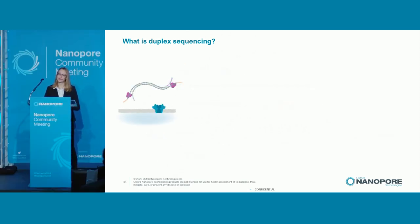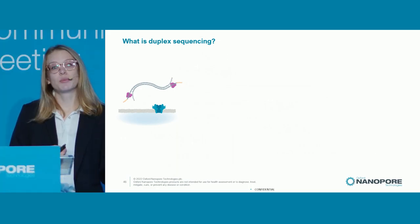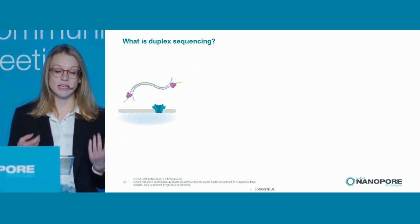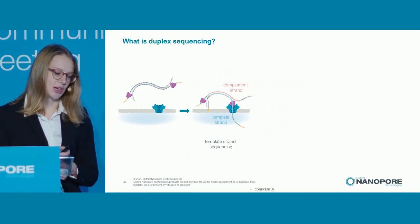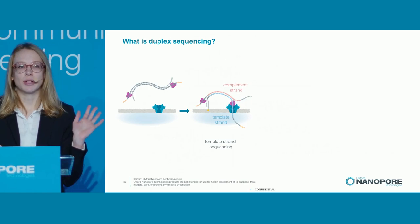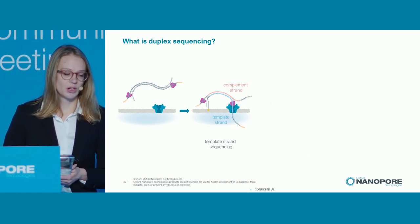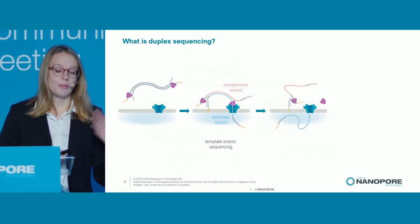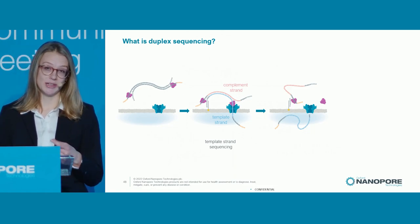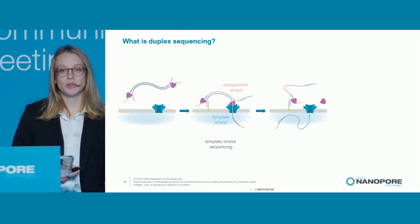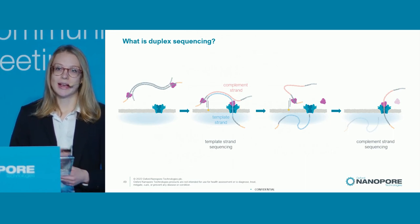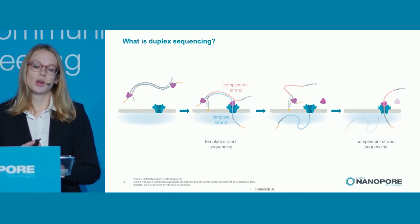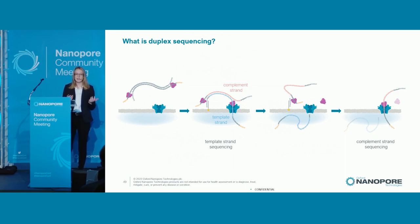How does duplex sequencing actually happen on the flow cell? Here's an illustration of one way in which it can happen. The same piece of DNA floats around the flow cell, and by chance one of the ends of the DNA molecule will encounter the pore first, and one strand will start sequencing through. That first strand we call the template strand, and as it sequences through the pore, it's unzipping from its complement strand. As the template strand finishes sequencing through the pore, that leaves the five prime end of the complement strand in close proximity to the pore. Therefore, with some likelihood, the complement strand will then follow immediately after the template strand through the same pore. We detect this in the sequencing output as a pair of reads transiting one after the other through the same pore with similar sequence lengths and complementary bases — and this we call a duplex pair.